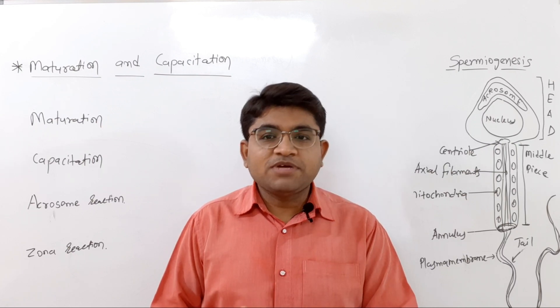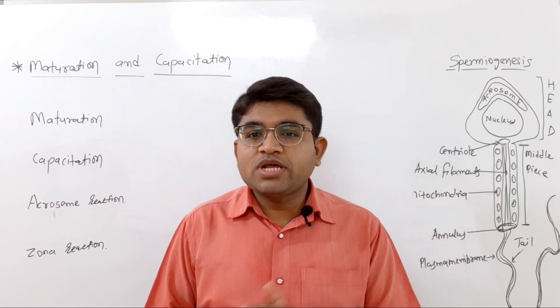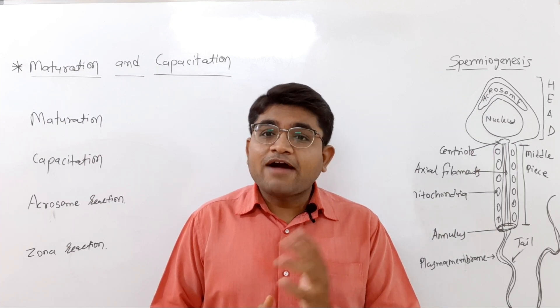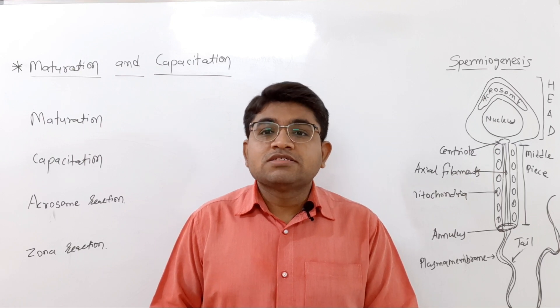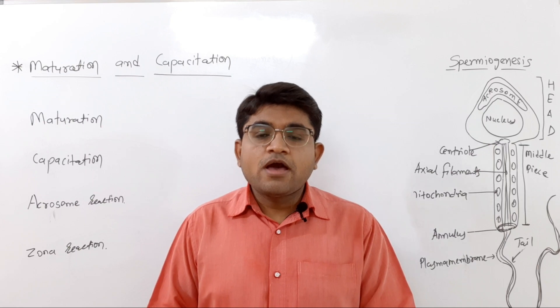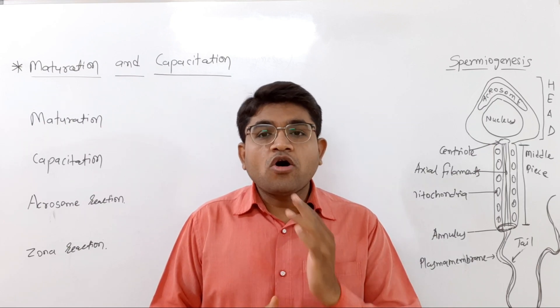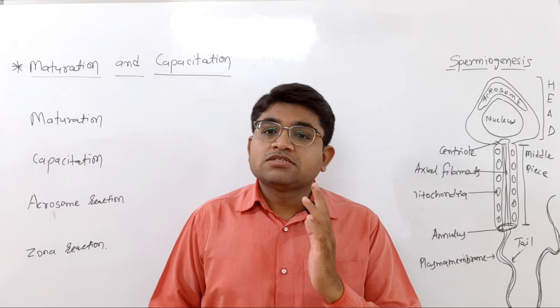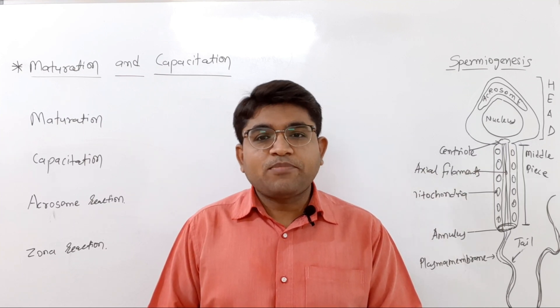In the epididymis, the process of maturation is started, and after this process they acquire some motility and maturity. But these sperms become fully motile only after they get contact with the secretions of seminal vesicles and the prostate.